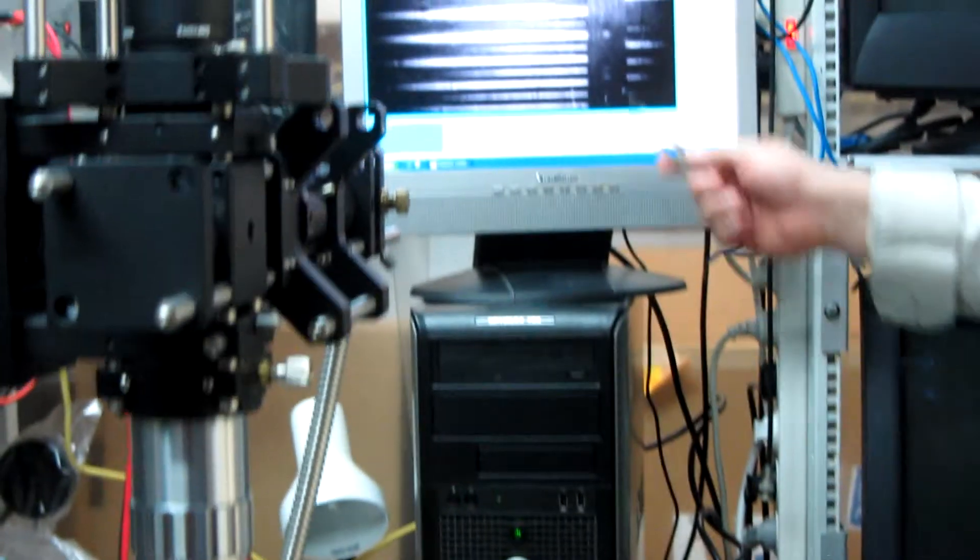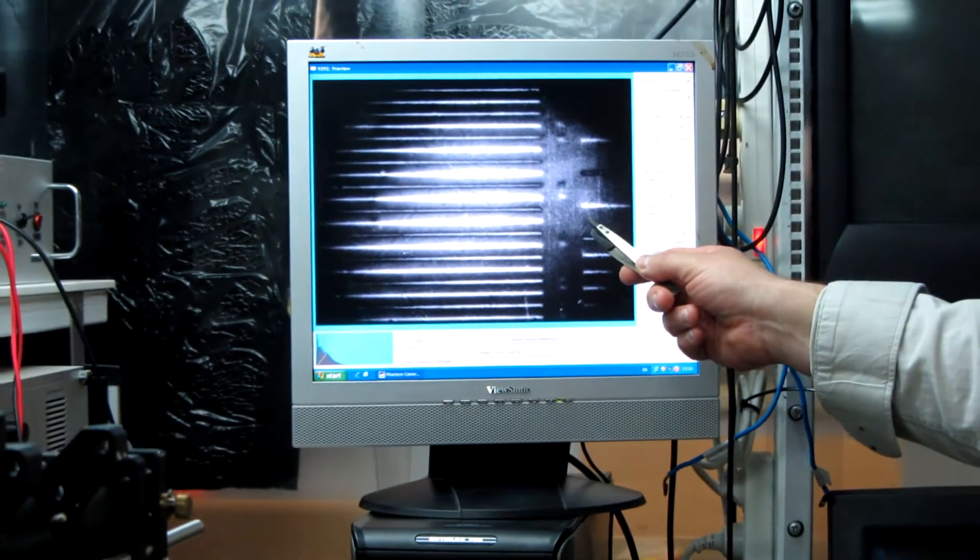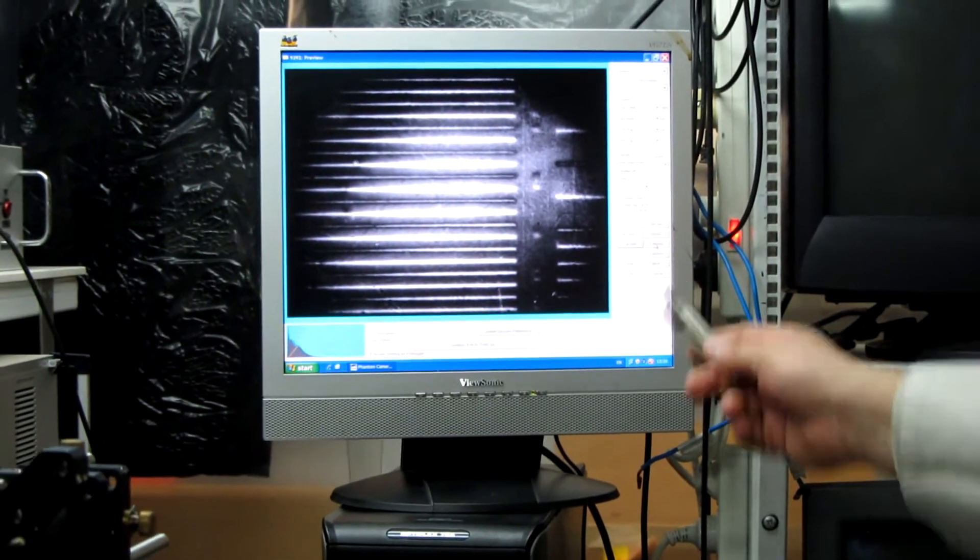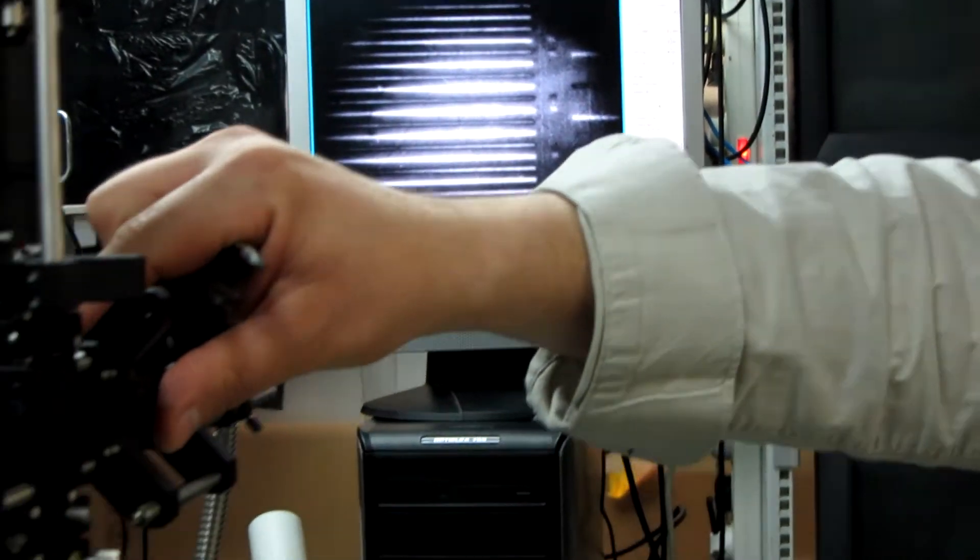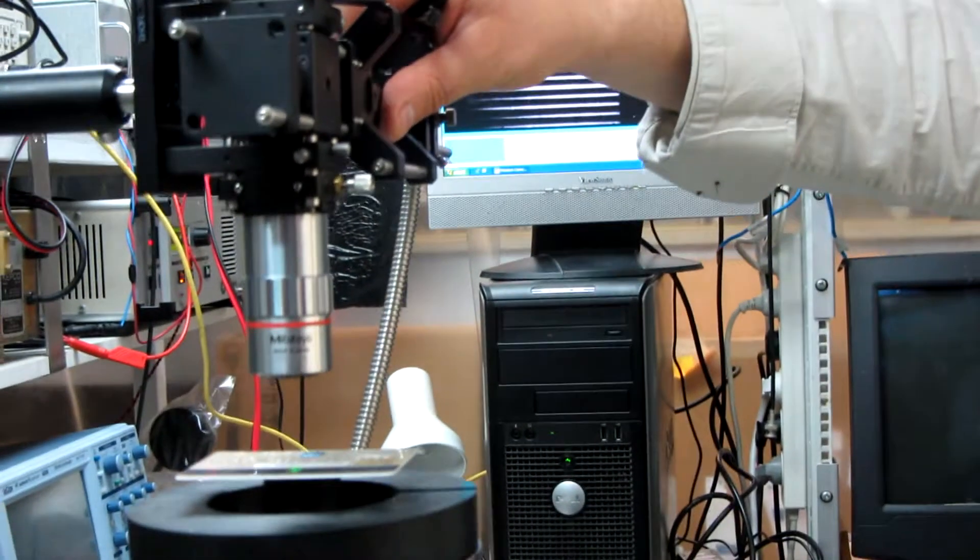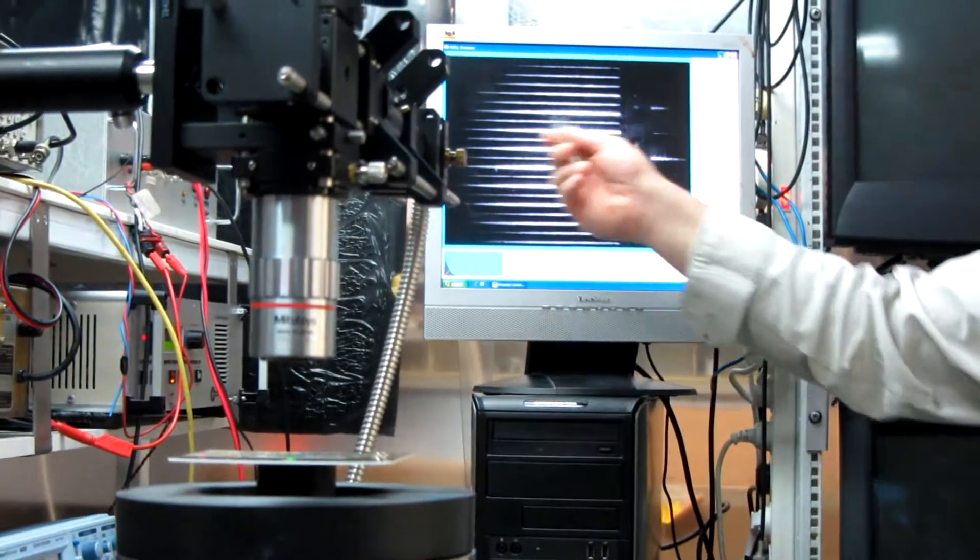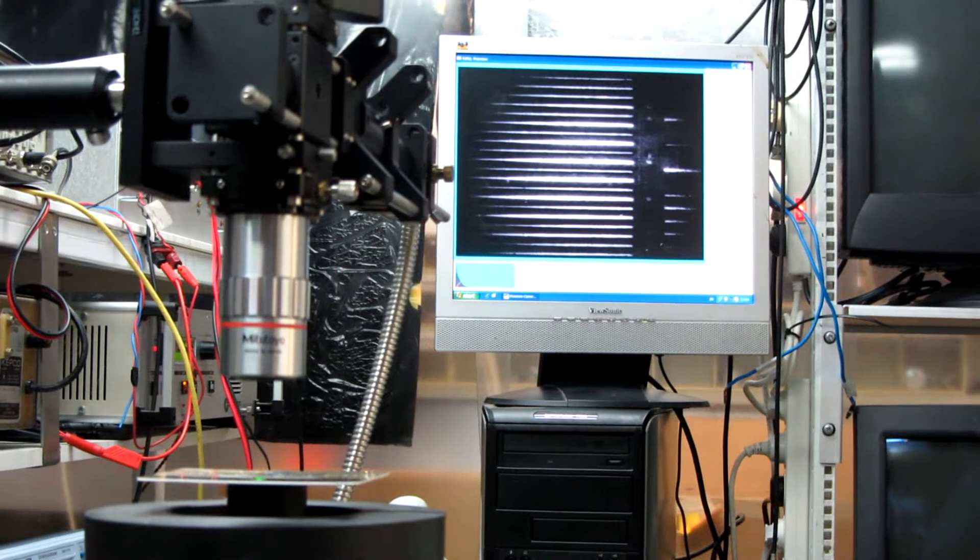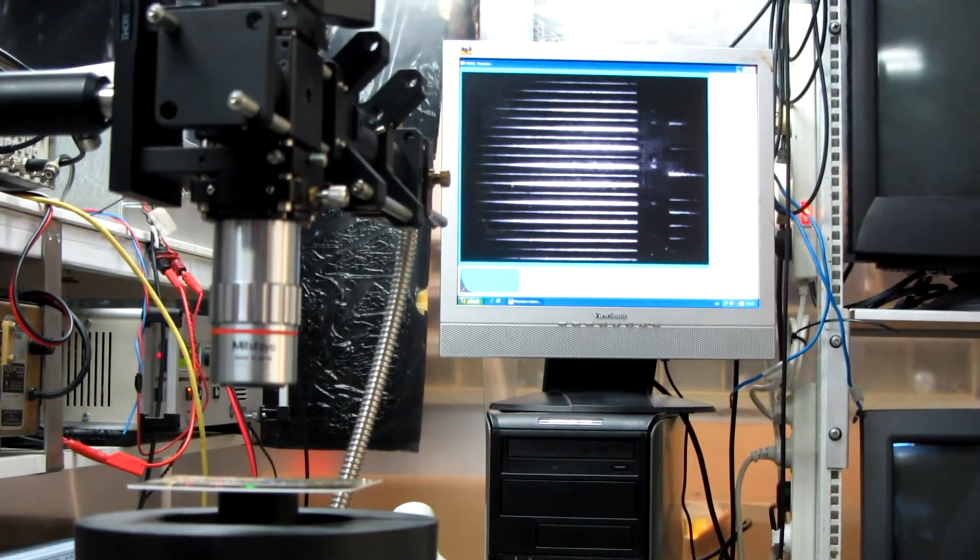So on the screen here, we now see the magneto-optical image of the magnetic pattern in the credit card. And as you can see, all these stripes is carrying the information which the bank needs to be able to let you use the credit card. Thank you.